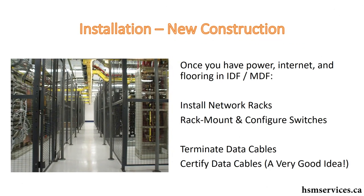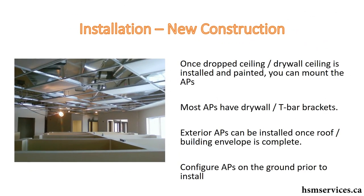Once you've got power, internet, flooring, and the IDF or MDF, you can install network racks, rack mount and configure your switches, and that kind of thing. You can also terminate the data cables to the patch panel and certify your data cables, which is a very good idea. I highly recommend you buy or rent a cable certifier. Once you've installed your dropped ceiling, you can start pulling the wire, terminating the wire in the ceiling, and mounting the access points.